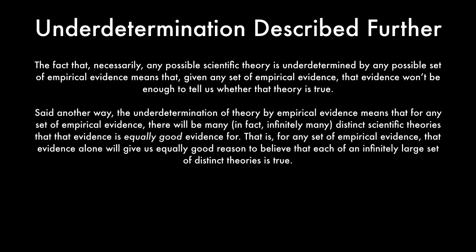Said another way, the under-determination of theory by empirical evidence means that for any set of empirical evidence there will be many — in fact infinitely many — distinct scientific theories that that evidence is equally good evidence for. That is, for any set of empirical evidence, that evidence alone will give us equally good reason to believe that each of an infinitely large set of distinct theories is true.